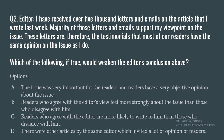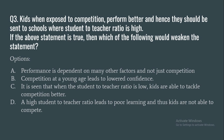Question 3: 'Kids, when exposed to competition, perform better and hence they should be sent to schools where the student-to-teacher ratio is high.' Which of the following would weaken the statement? Options: (a) performance depends on many factors beyond competition, (b) competition at a young age leads to lowered confidence, (c) when the student-to-teacher ratio is low, kids tackle competition better, (d) a high student-to-teacher ratio leads to poor learning so kids cannot compete.